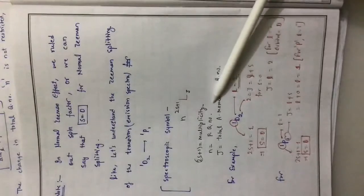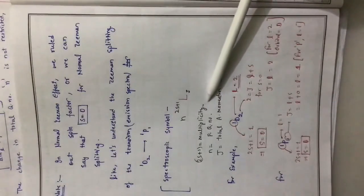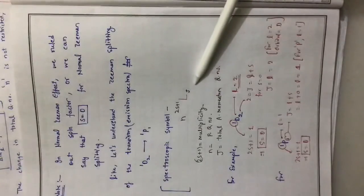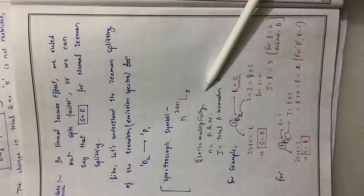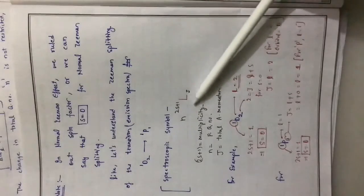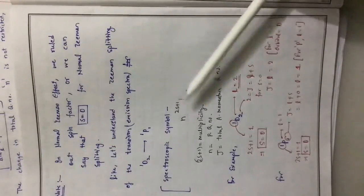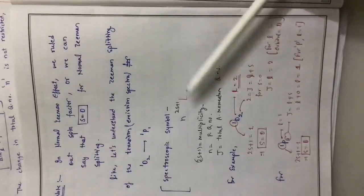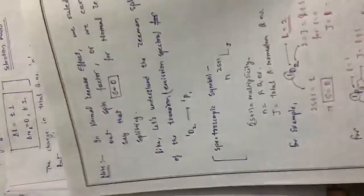That is how we determine any term: the multiplicity, the total angular momentum, and the orbital designation. This is how terms are determined in atomic physics. The spectroscopic symbol is very important. We already discussed this in earlier lectures and next we will try to understand the example again.